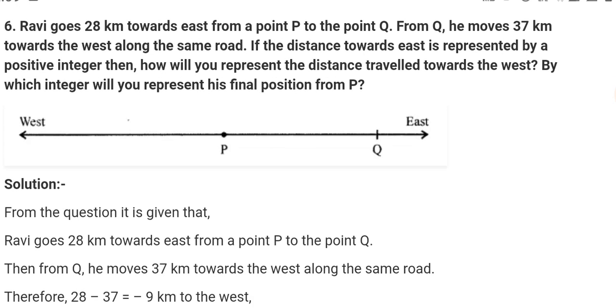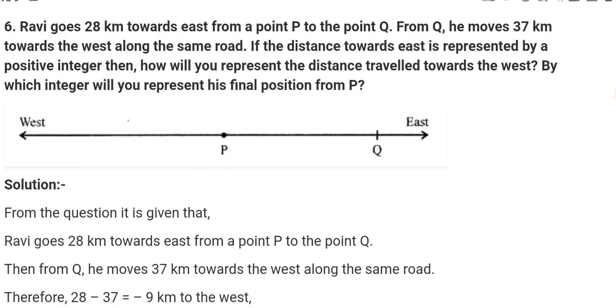Question number 6. Ravi goes 28 km towards east from point P to Q. From Q, he moves 37 km towards the west along the same road. Then if the distance toward east is represented by a positive integer, then how will you represent the distance towards the west? By which integer will you represent the final position from P? So we can see from the question it is given that Ravi goes 28 km from P to Q.